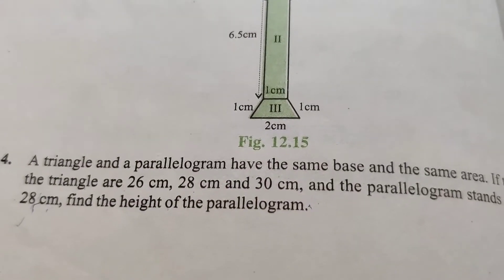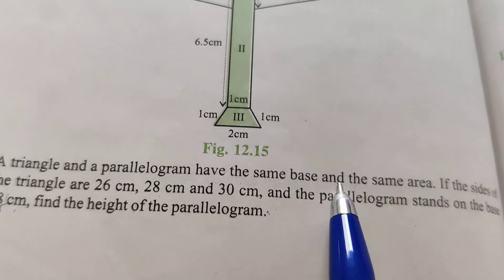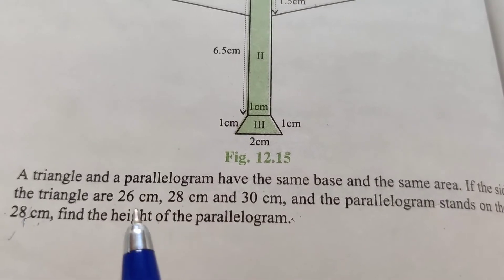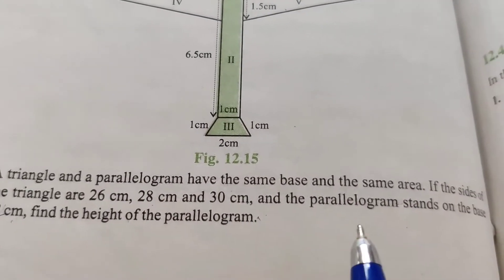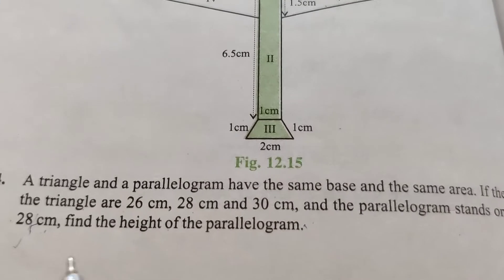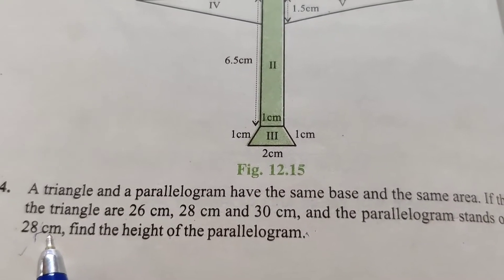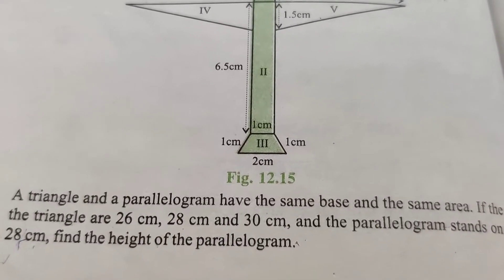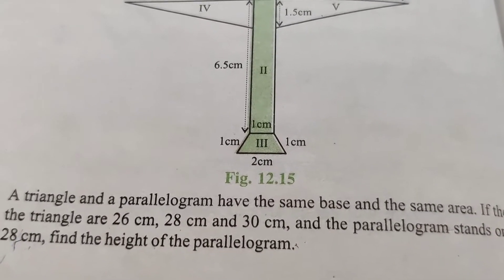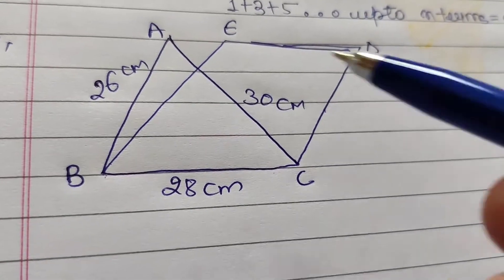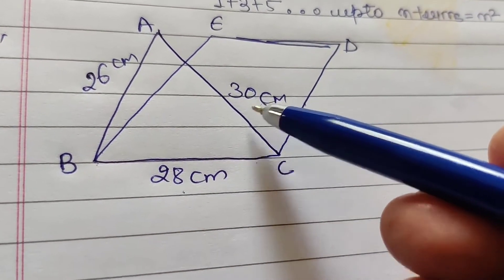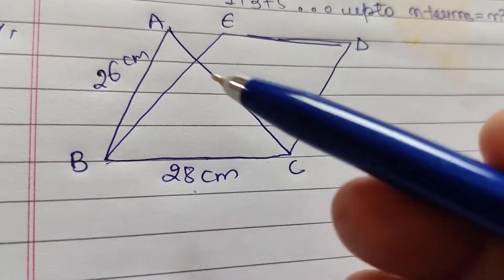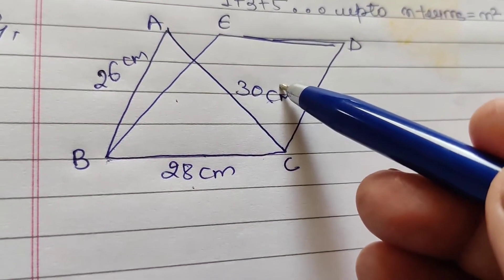Question number 4: If a triangle and parallelogram have the same base and the same area, and the sides of the triangle are 26, 28 and 30 centimeter, and the parallelogram stands on base 28 centimeter, find the height of the parallelogram. Triangle ABC has sides 26, 28, and 30; parallelogram BCDE has the same base 28. The area of triangle equals the area of parallelogram.